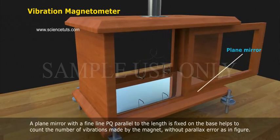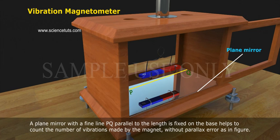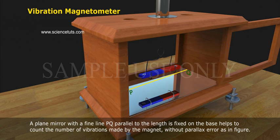A plain mirror with a fine line PQ parallel to the length is fixed on the base to help count the number of vibrations made by the magnet without parallax error, as shown in the figure.